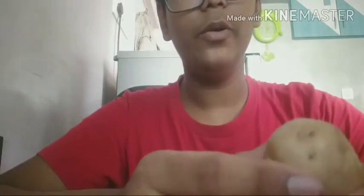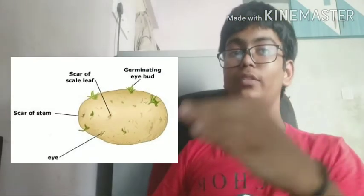Potato is actually a stem, and this stem type is called a tuber. In this potato, what many people think are the eyes of the potato are actually the roots. An eye is a structure that looks like a crescent moon — you can see one on screen. These eyes are actually the nodes of the potato, and from these nodes a new plant grows.